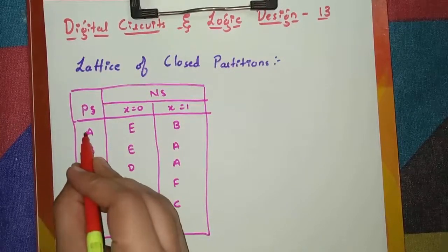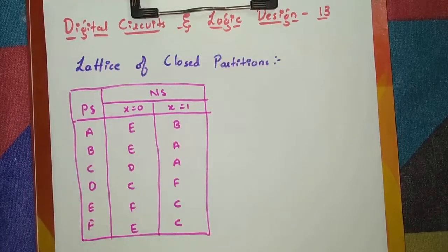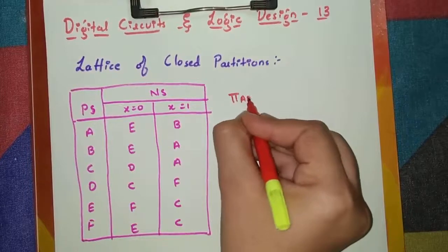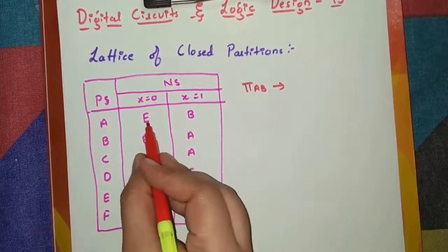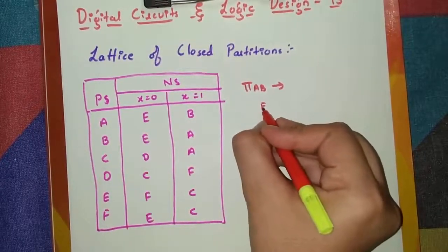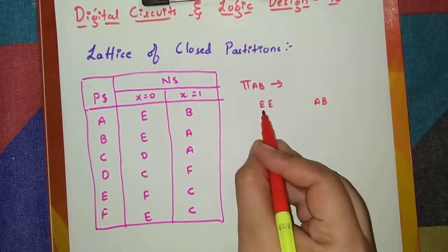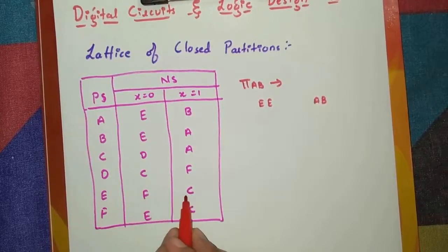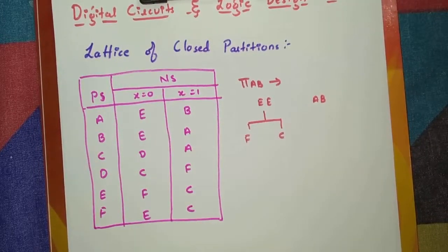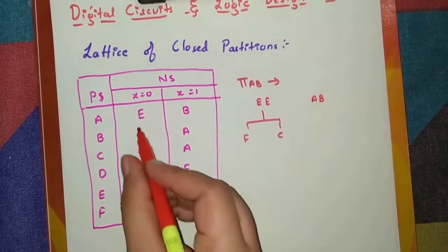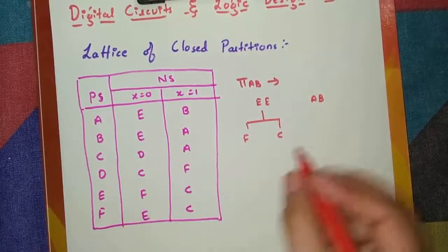We will start with A. We compare A, B, then go to AC, AD, AE, AF, and BC, BD, BE, BF, and so on. First write down pi(AB). See what are the next states for A and B — we have E, E here and A, B here. So write down E, E and A, B. Now go to E — the next states are F and C.